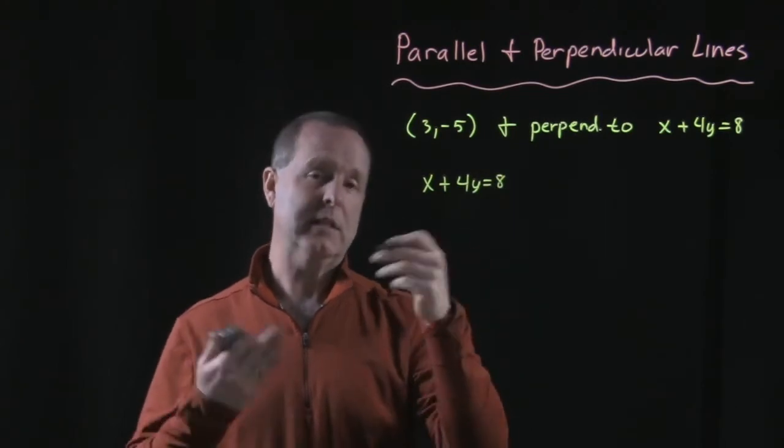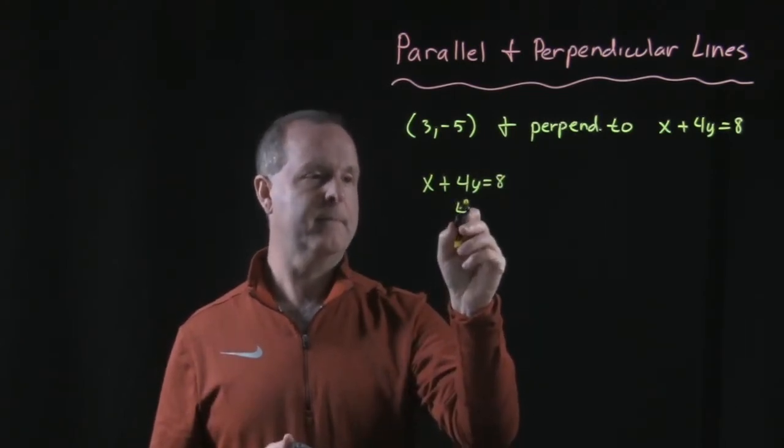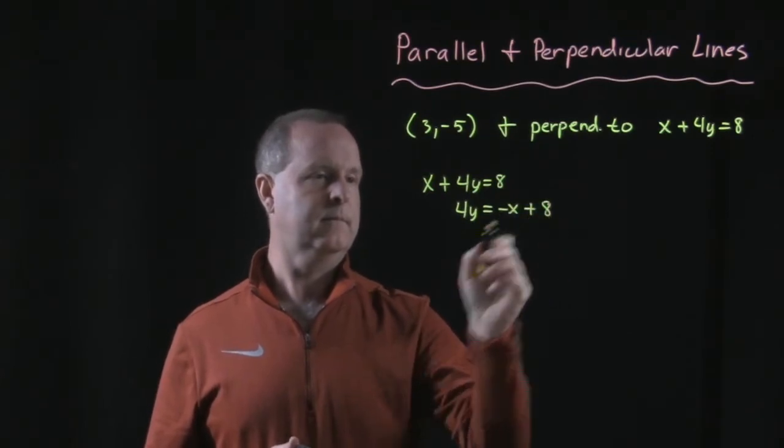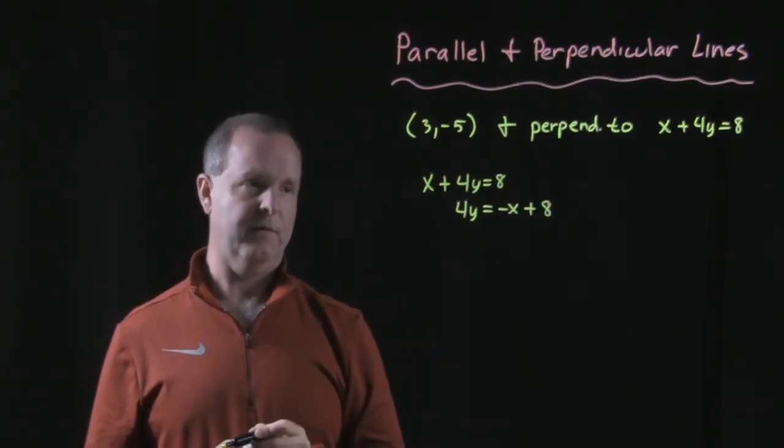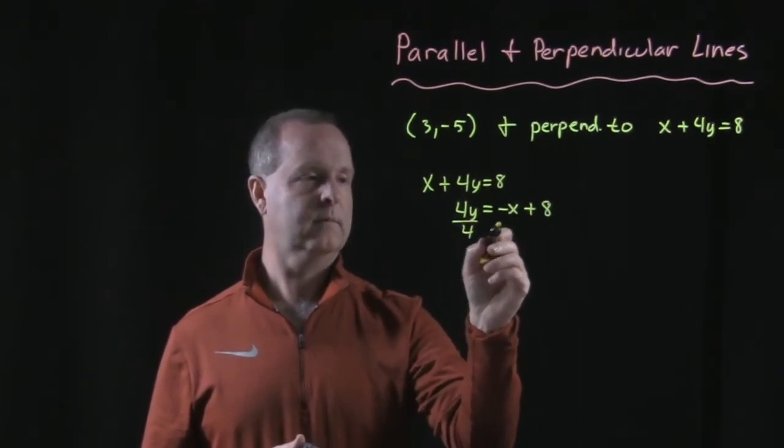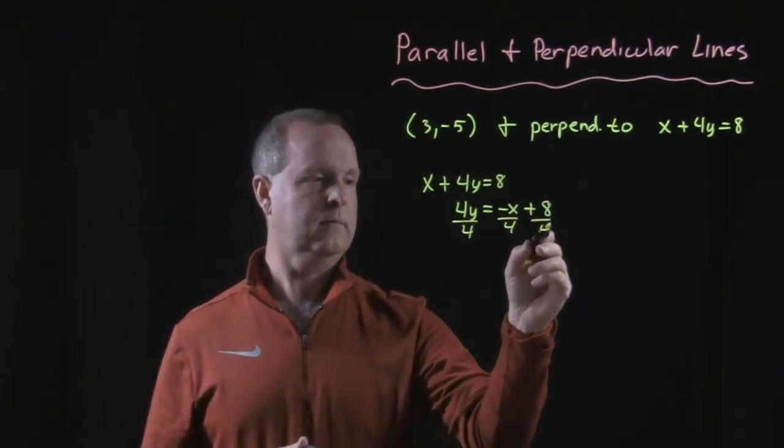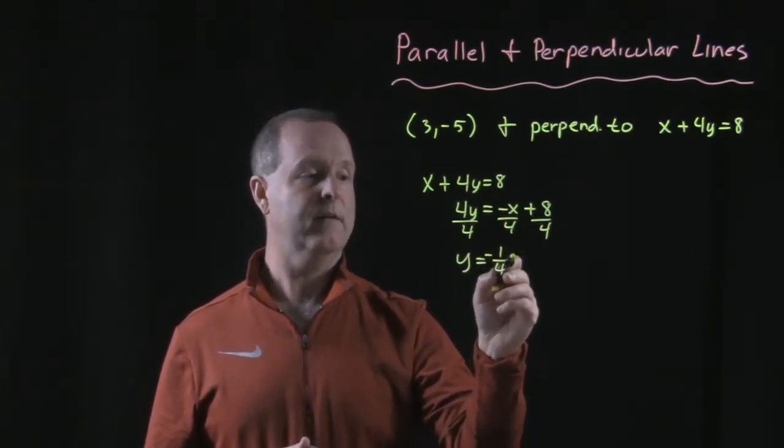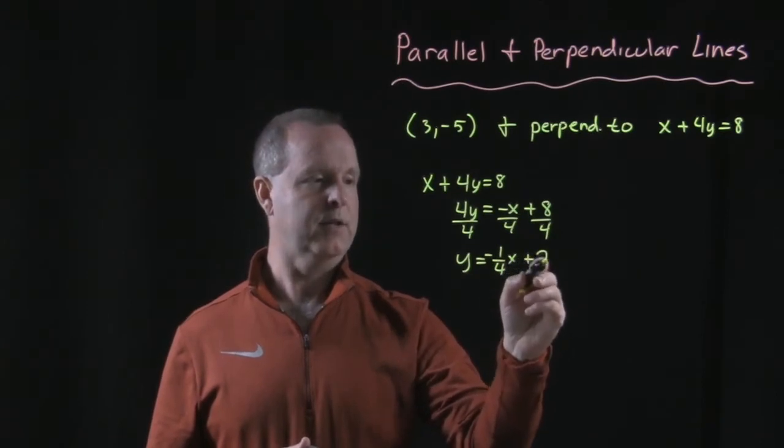Subtract x from both sides, divide both sides by 4, which gives me y = -¼x + 2.